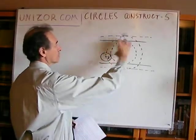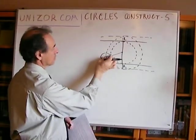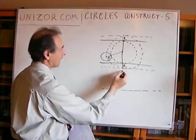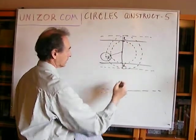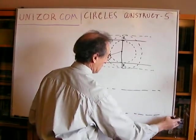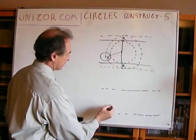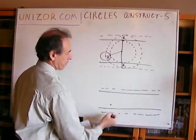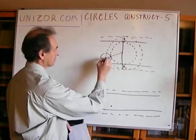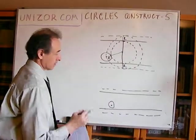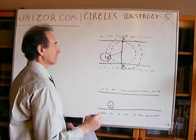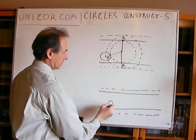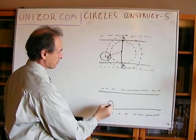Here is the solution: number one, shift the top line up by r and shift the bottom parallel line down by r, where r is the known radius of the given circle. Now we have to construct a circle which is tangent to these shifted dotted lines and passes through the center of the given circle.